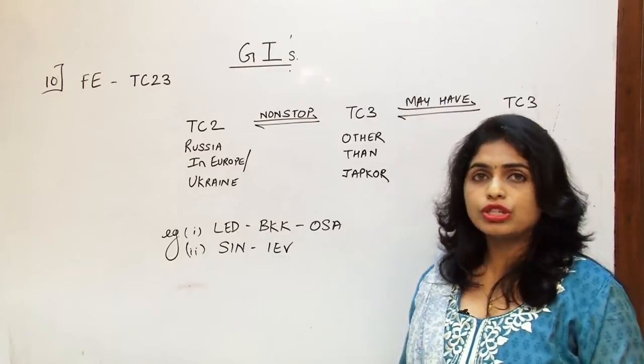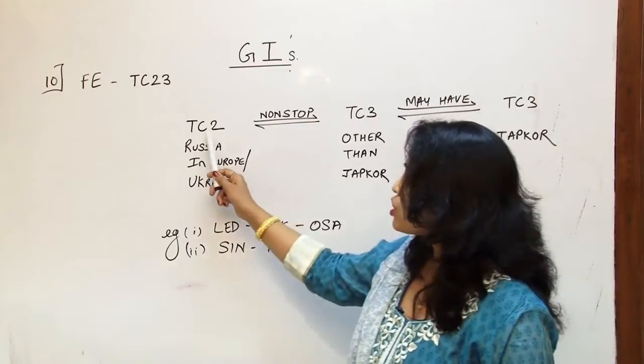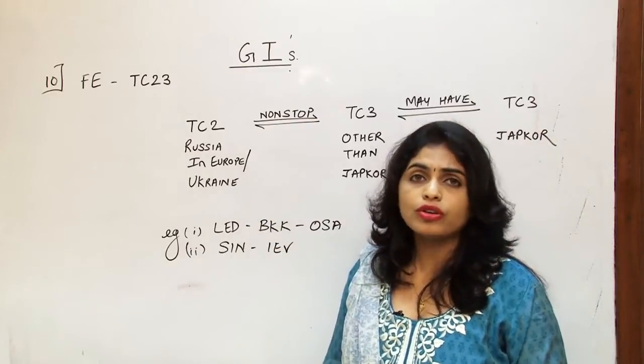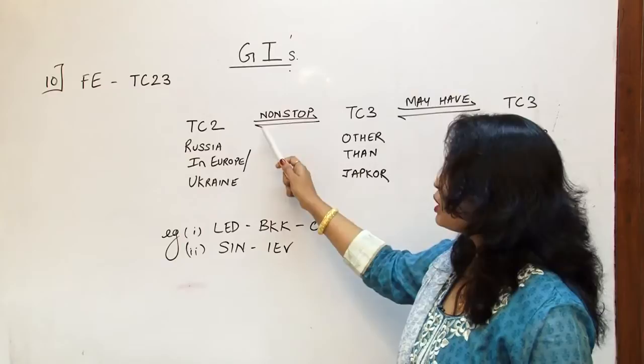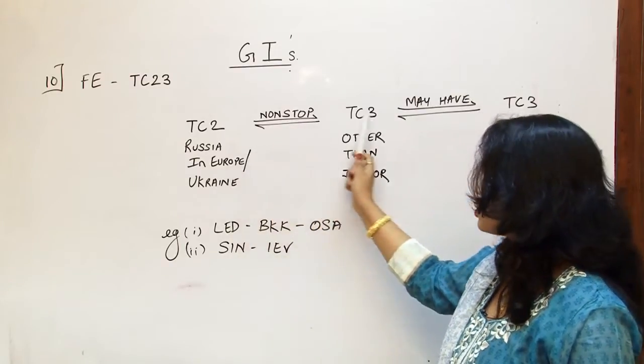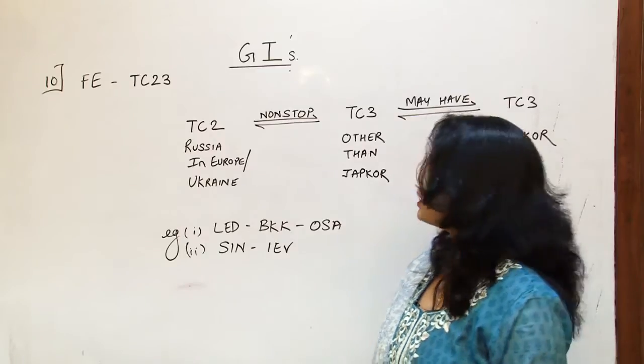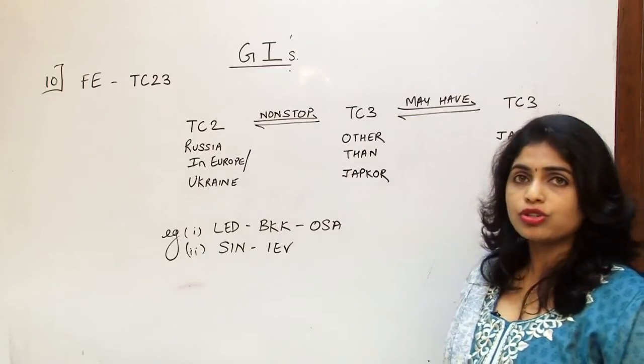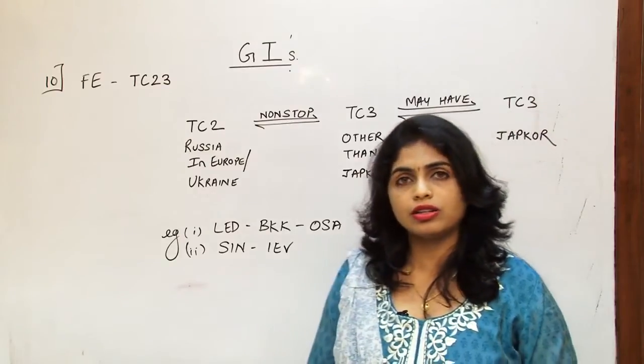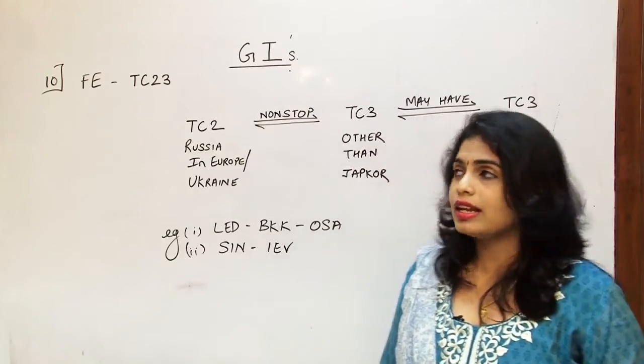Now what are the conditions for a routing to be an FE? Traffic Conference Area 2 the point has to be either Russia in Europe or it can be Ukraine. It has to be a non-stop service. After TC2 it has to enter TC3 but it cannot be JAPCOR, so it has to be other than JAPCOR. Further ahead it may have JAPCOR as its country in Area 3.